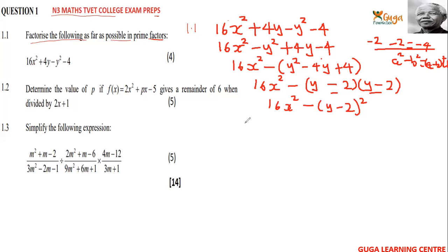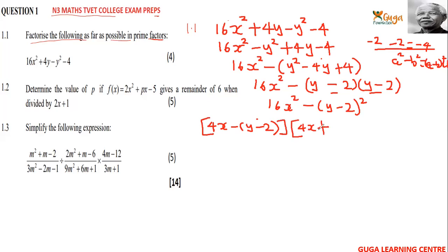What are the factors of 16? You should have 4x. So you write: (4x minus (y minus 2)) — this is the first factor — and then the second one is (4x plus (y minus 2)). Because we've got a negative, we can remove the inner brackets.